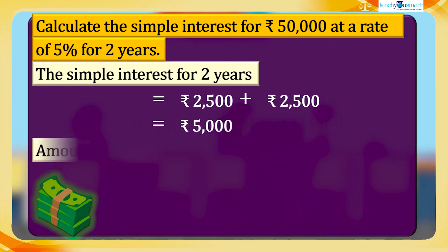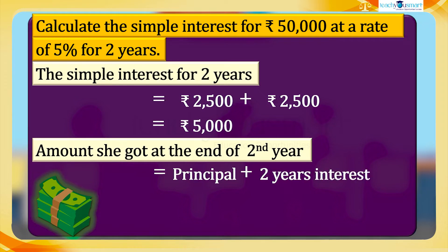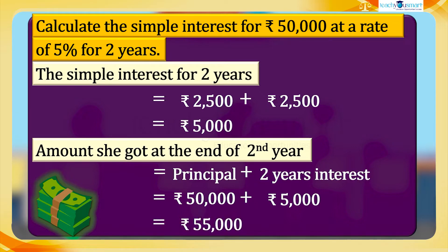The amount she got at the end of the second year equals principal plus two years' interest = 50,000 + 5,000 = 55,000 rupees.